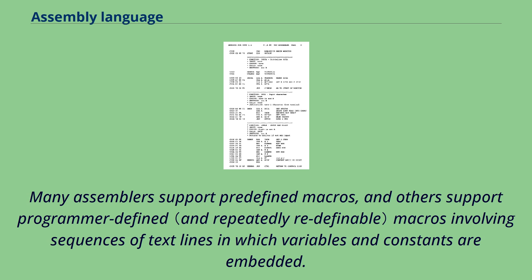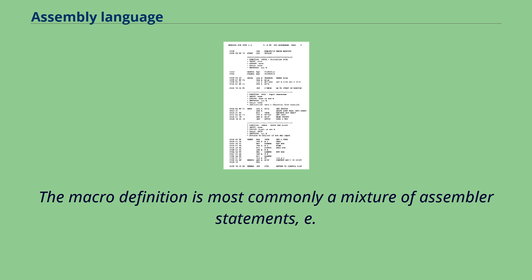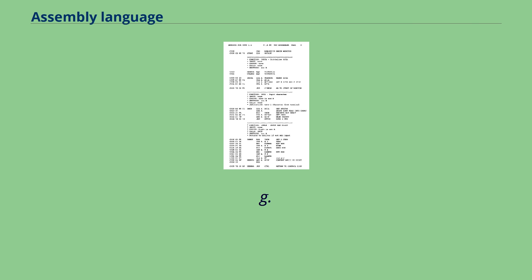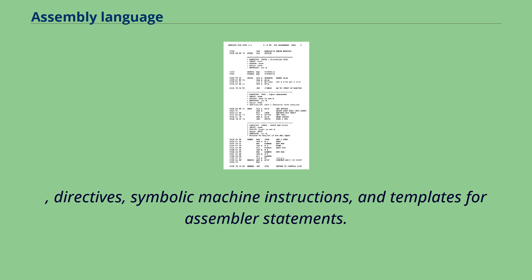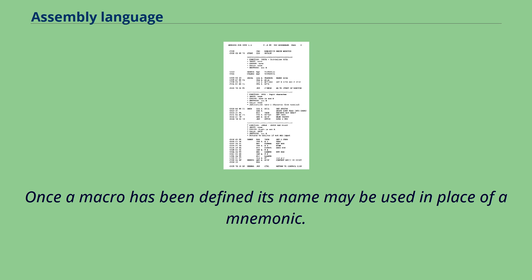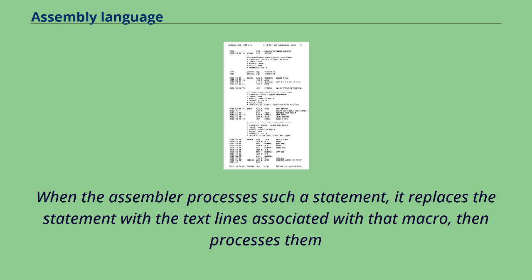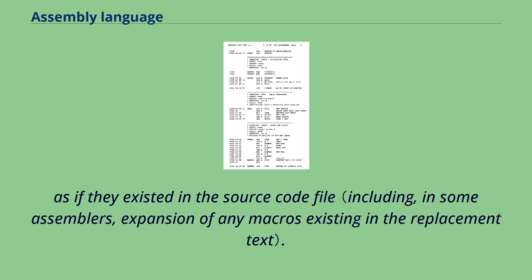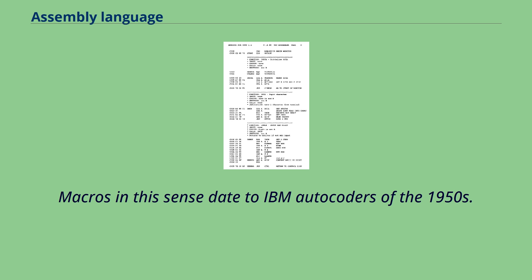Many assemblers support predefined macros, and others support programmer-defined macros involving sequences of text lines in which variables and constants are embedded. The macro definition is most commonly a mixture of assembler statements, e.g. directives, symbolic machine instructions, and templates for assembler statements. This sequence of text lines may include opcodes or directives. Once a macro has been defined, its name may be used in place of a mnemonic. When the assembler processes such a statement, it replaces the statement with the text lines associated with that macro, then processes them as if they existed in the source code file. Macros in this sense date to IBM autocoders of the 1950s.